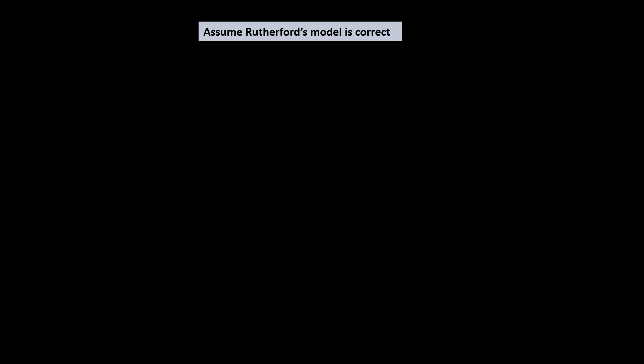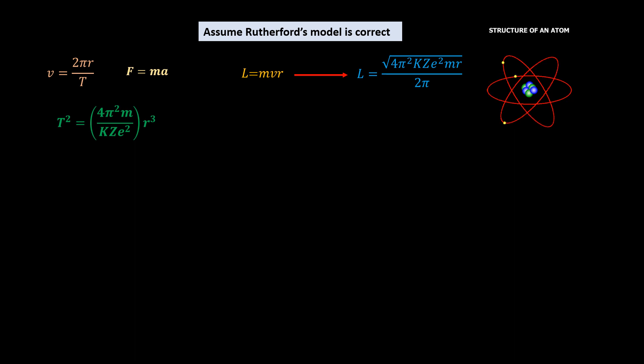Let us start by assuming that the Rutherford model is correct. That is, electrons orbit the atom like planets orbit the sun. This means that the electron's velocity is given by 2 pi r over t. We can show using the formula f equal ma that the square of the period is proportional to the cube of the orbital radius for any orbiting electron. Using this relation and the expression for linear velocity, we can show that the angular momentum of an electron is equal to the square root of 4 pi squared kze squared m r over 2 pi.